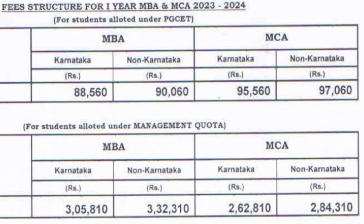Similarly, for MCA students, the fees is 95,560 rupees for Karnataka students and 97,060 for non-Karnataka — again a 1,500 rupee difference. Management quota fees is also mentioned, though management quota may not be available: it is 3,50,000 for MBA and 2,62,810 for MCA. That is the overall fee structure for PGCET and management quota admissions.